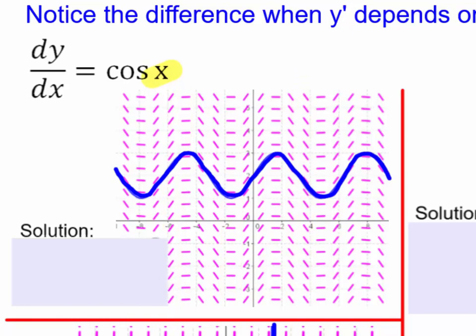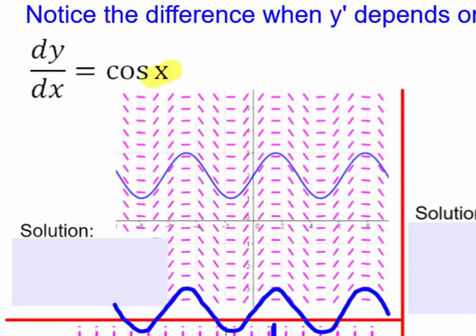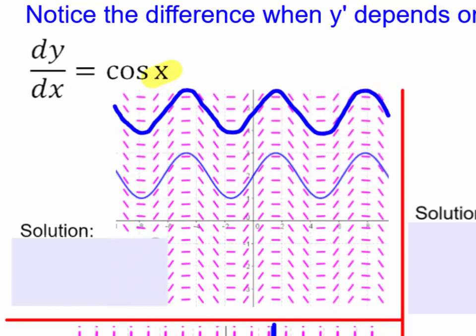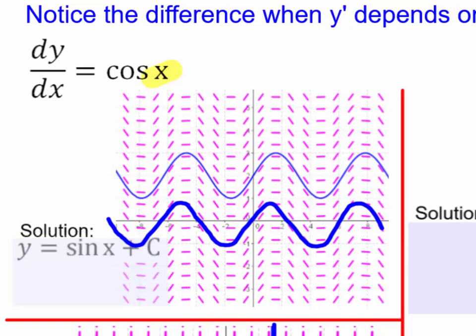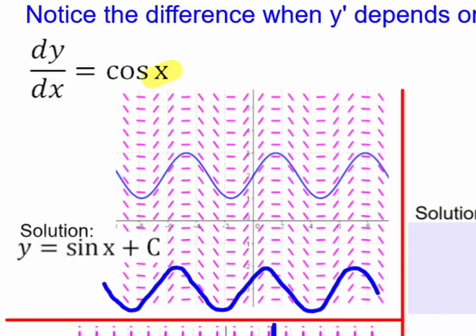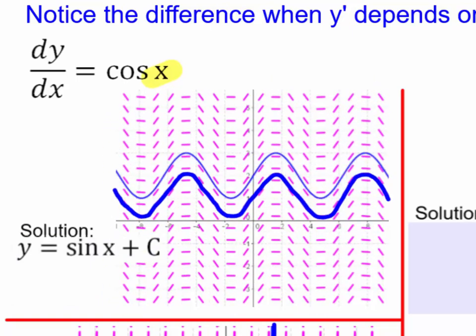A consequence of that observation is that when you take your solution, the c value has the effect of just allowing the curve to vertically translate. Here is the solution in that case, y equals sine of x plus c, and the c is a vertical translation.